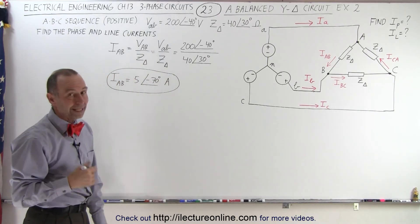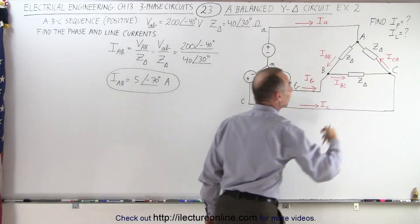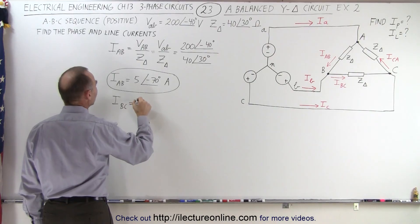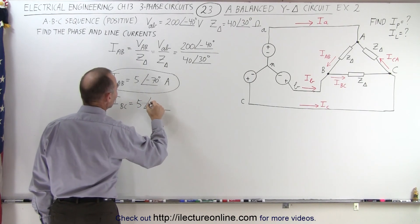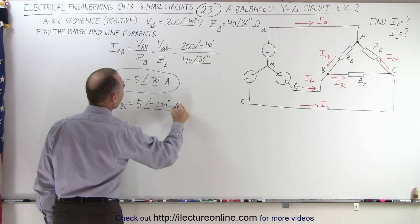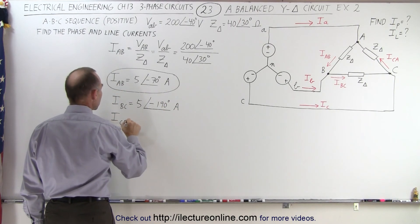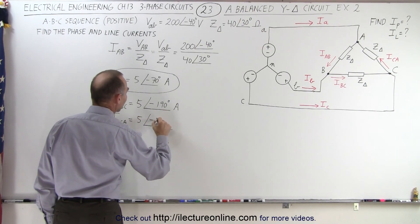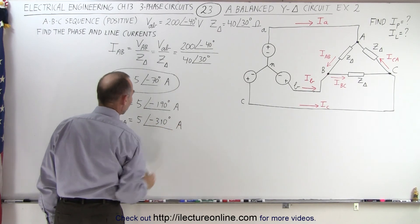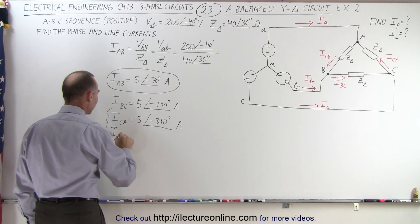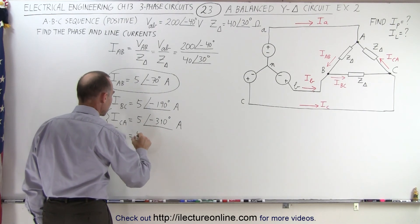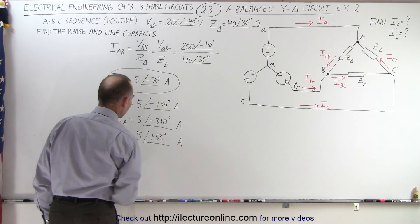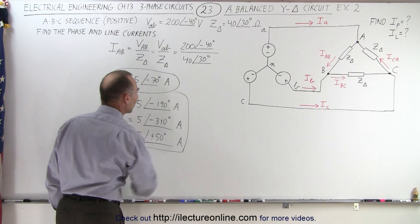Now that we have the first phase current, we can easily find the second and third, because they are all offset by 120 degrees each. So IBC equals 5 amps with a phase angle of minus 190 degrees, and ICA equals 5 amps with a phase angle of minus 120 degrees. You can convert that to a positive angle by adding 360, giving positive 50 degrees.